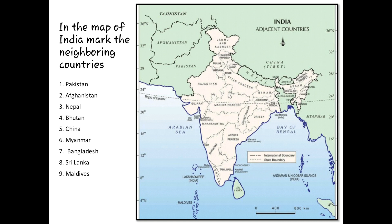In the second map, we are having the neighbouring countries of India. All the countries are marked in the map. You are supposed to mark them in a plain political map of India and paste it in the notebook. Our neighbouring countries are: Pakistan, Afghanistan, Nepal, Bhutan, China, Myanmar, Bangladesh, Sri Lanka, and Maldives.